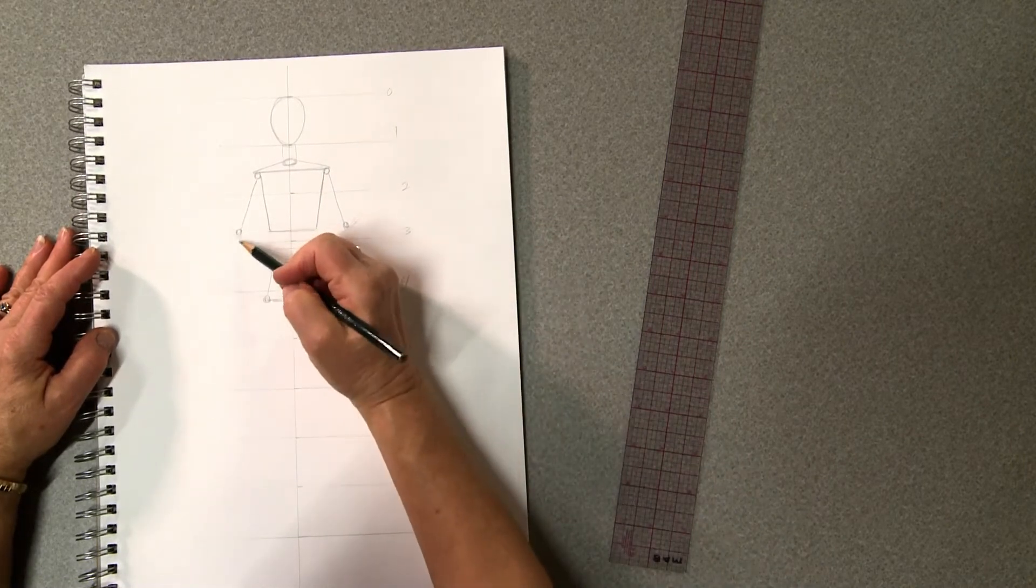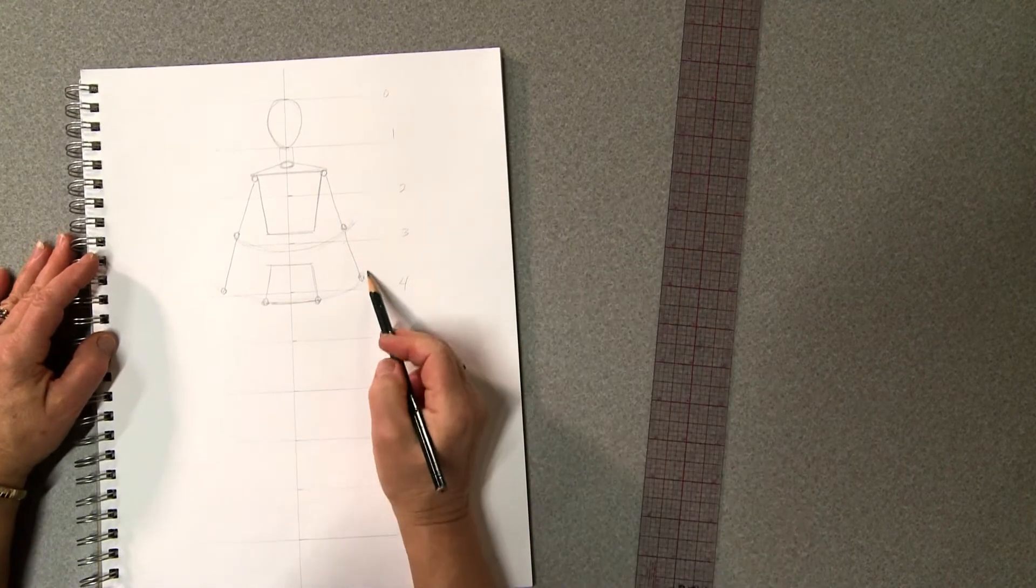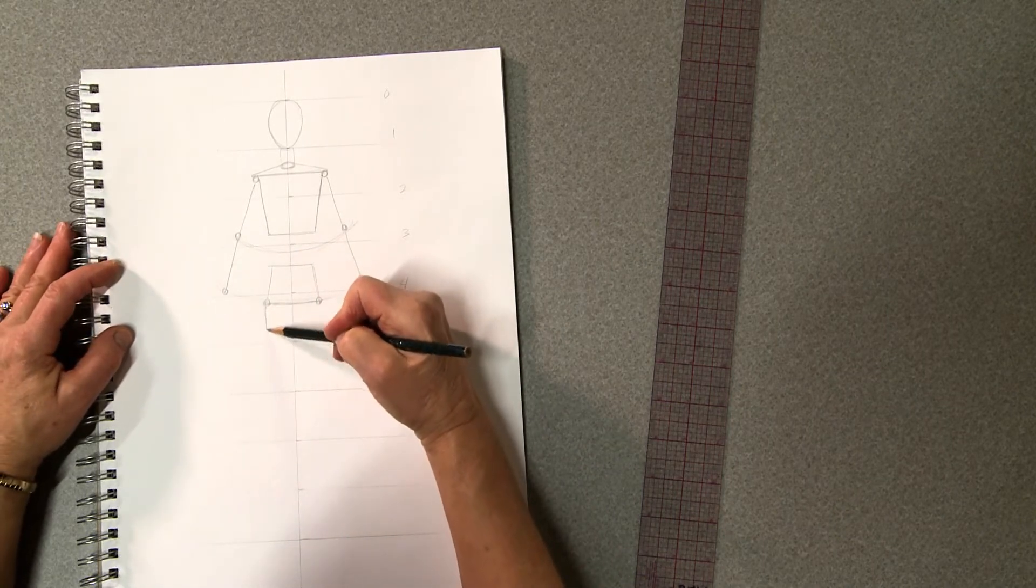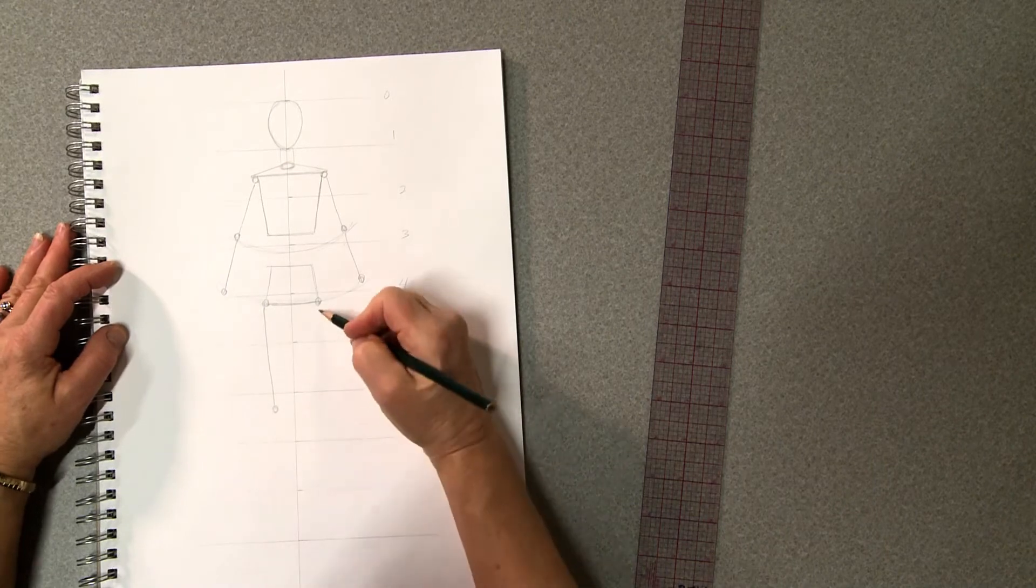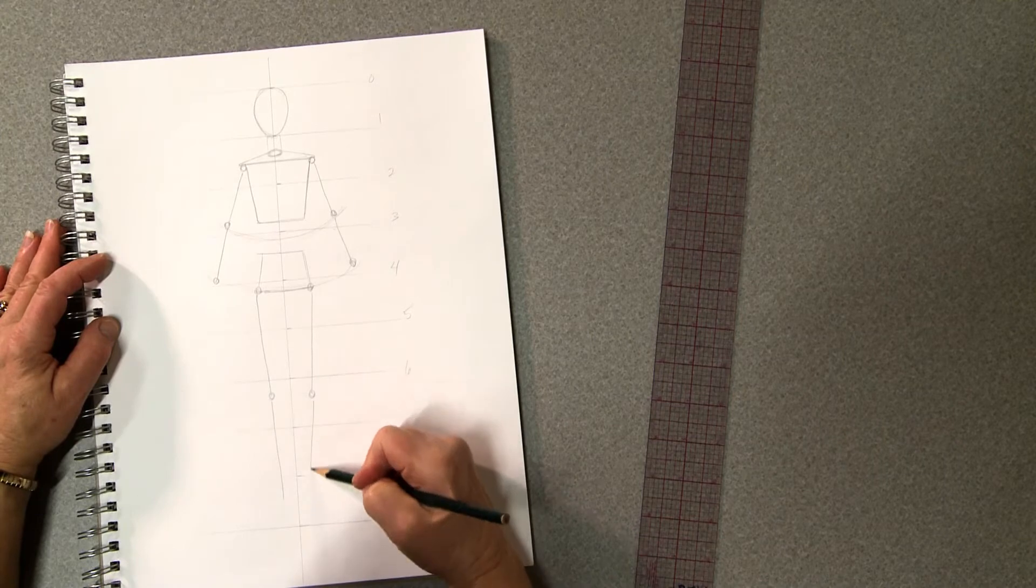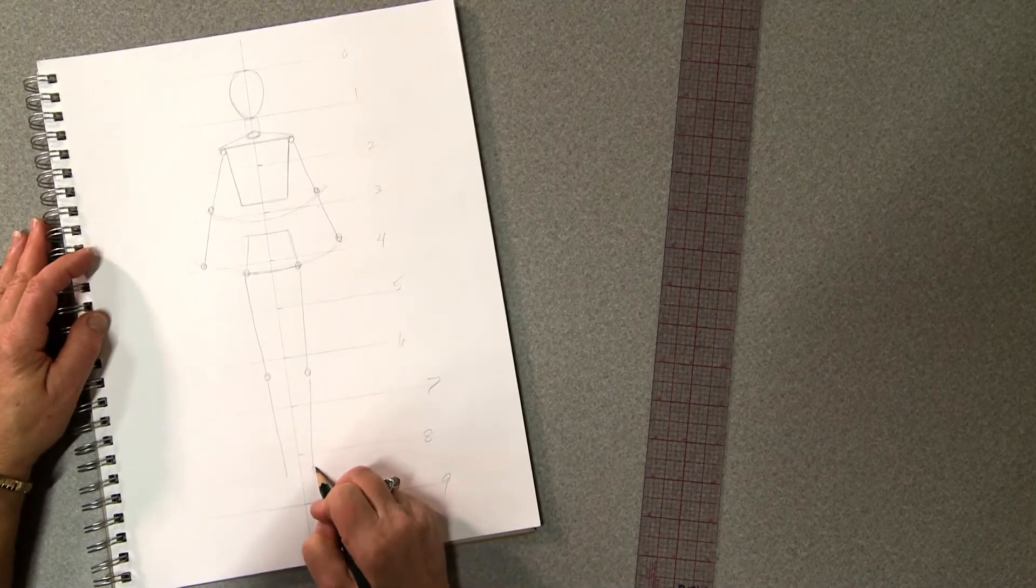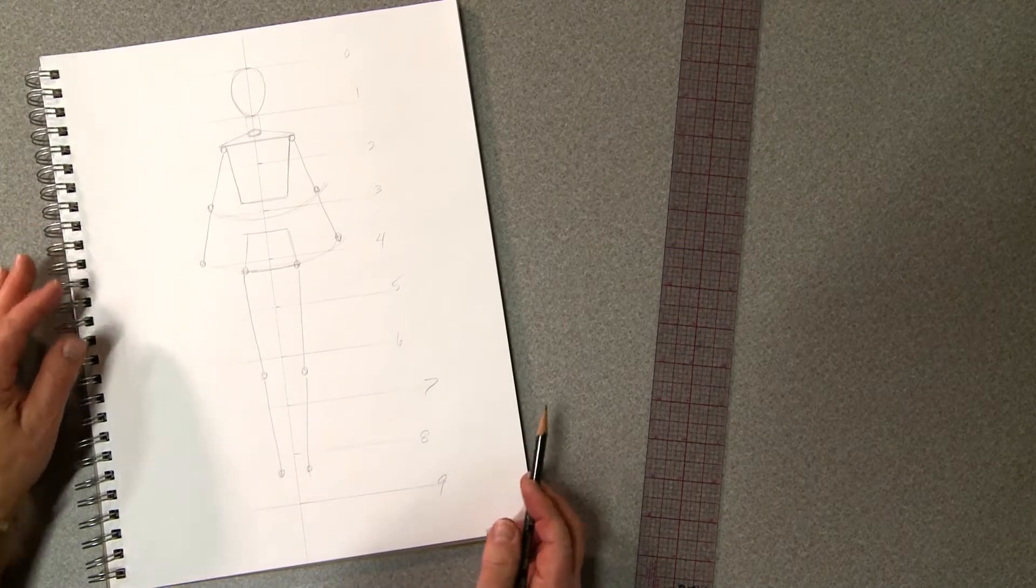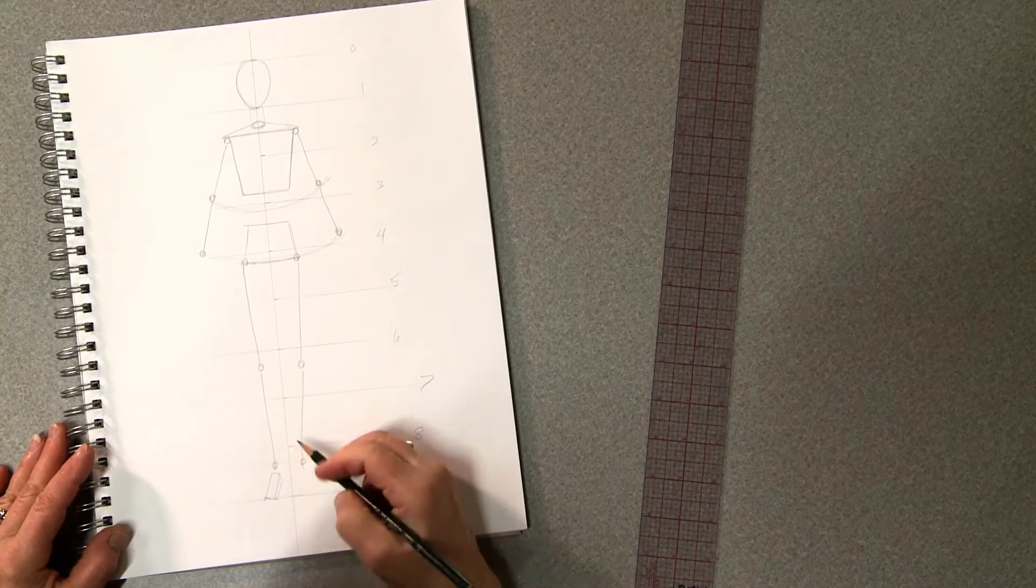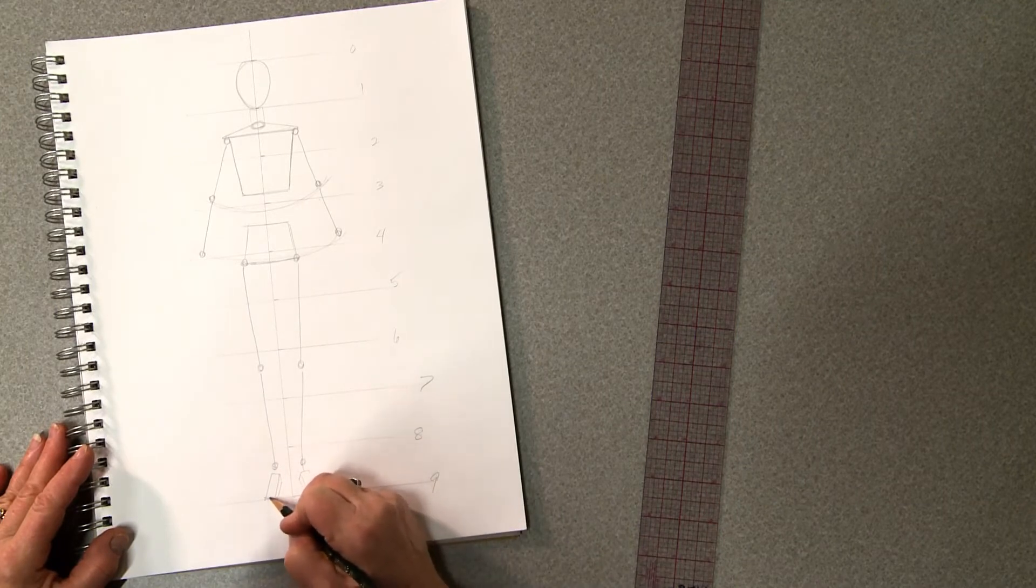More ball bearings. The lower arm down to the smile lines for the wrists. We'll draw the legs below line six and draw the knee. Then the lower leg down past line eight for the ball bearings for the ankles. And now we have plenty of room to draw the feet. Remember those were wedges of cheese and the toes.